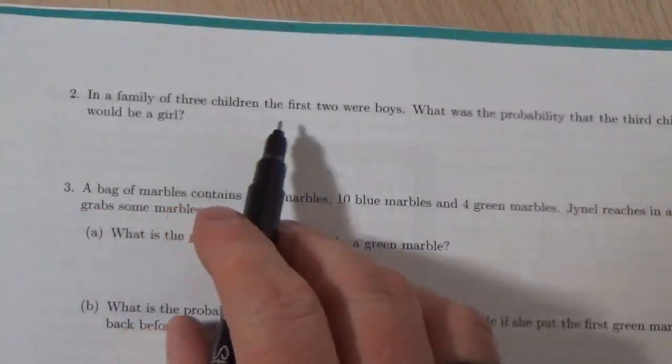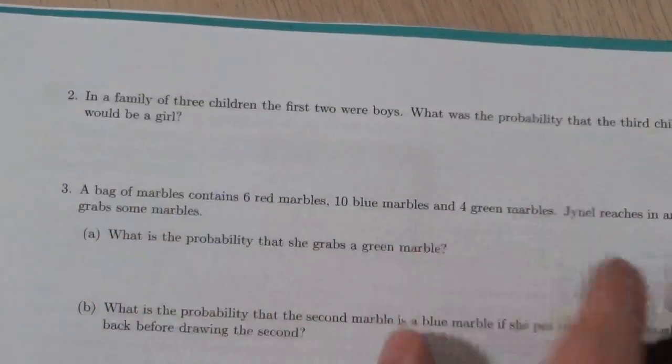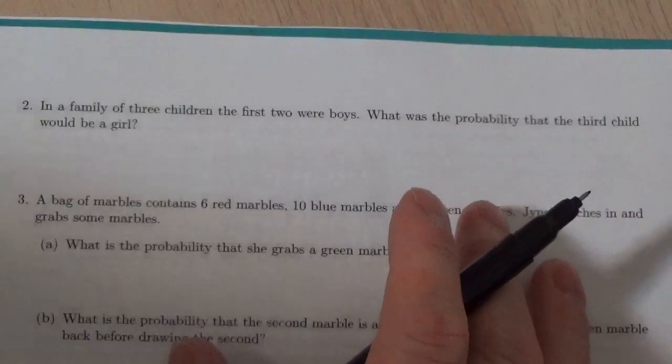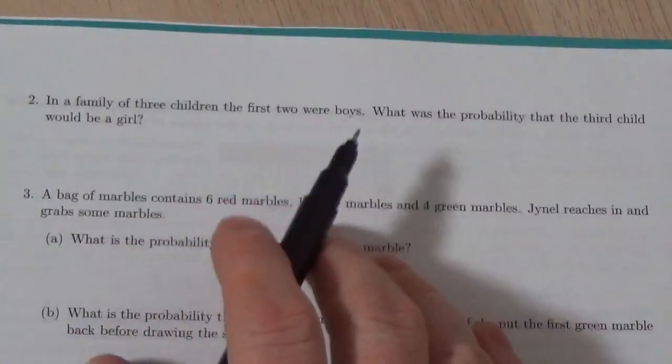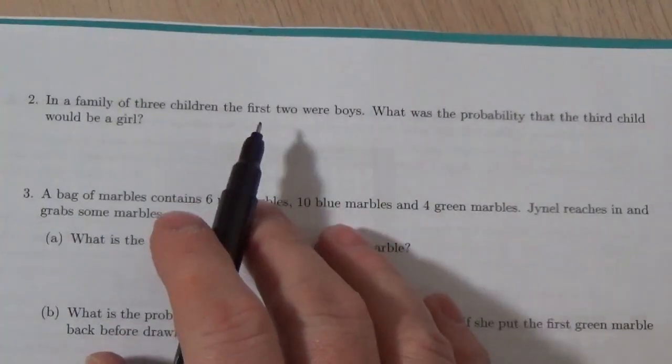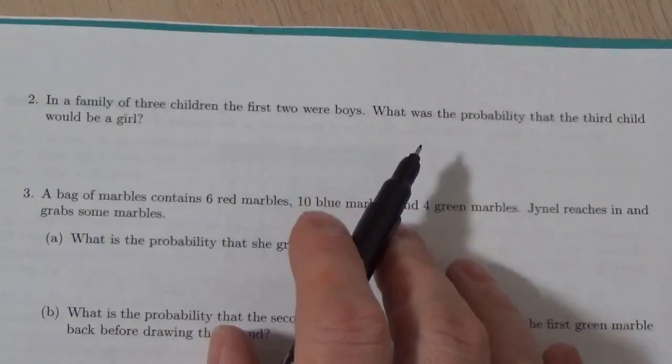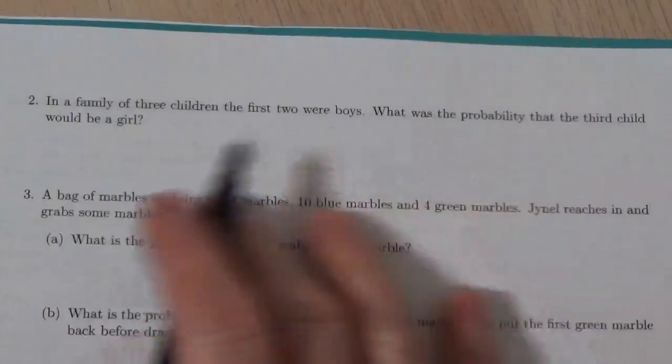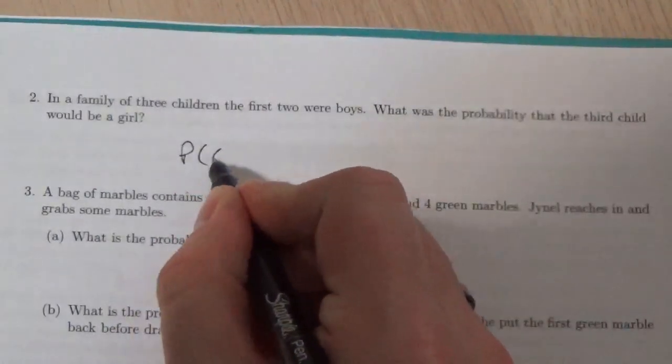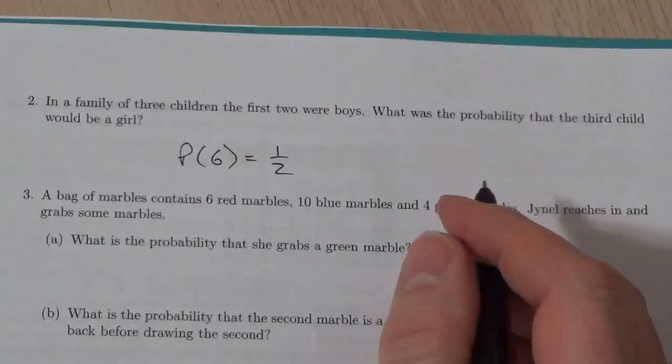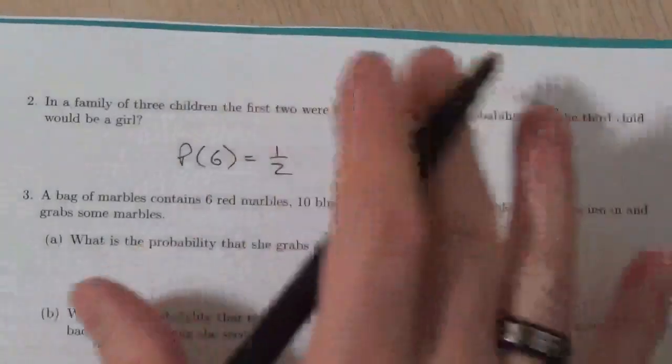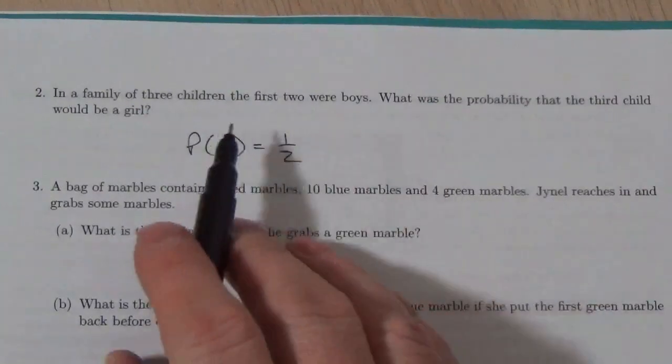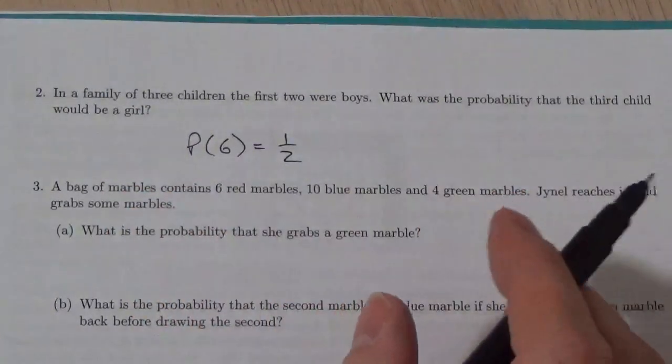Next question: In a family of three children, the first two were boys. What is the probability that the third child would be a girl? Does the fact that the first two children were boys influence whether the third child is a boy or a girl? The intention of this problem is to emphasize that the events should be considered independent. The probability that the third one is a girl is one out of two.